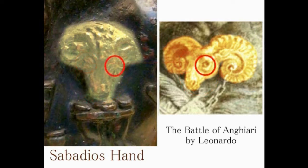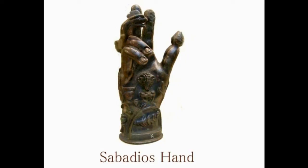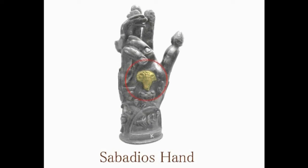バフォメットとは誰なのか？議論が続いていますが、私、林博史は、バフォメットはルネッサンスの時代に現れた1500年後のイエス自身、あるいはそのシンボル的存在であると判断しています。では、もう一度最初から説明します。サバジオスの手です。サバジオスというのは、古代フリジアの神でした。そのサバジオスの手のひらに、奇妙な動物が描かれています。この動物に注意してください。